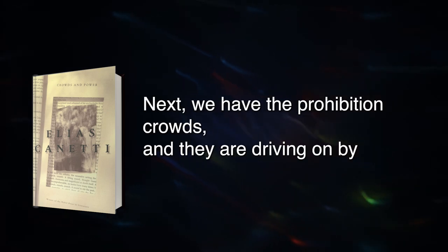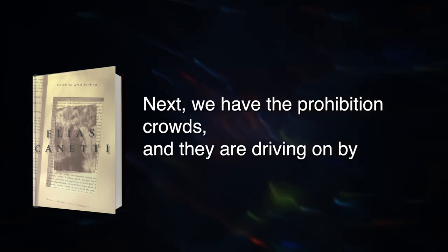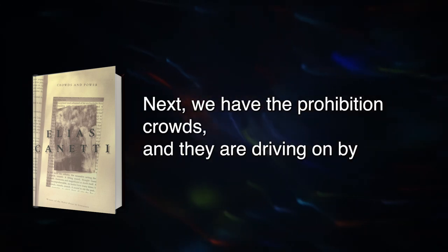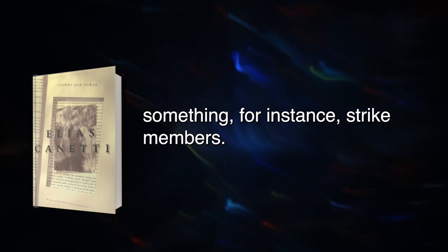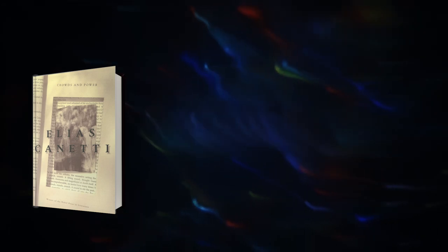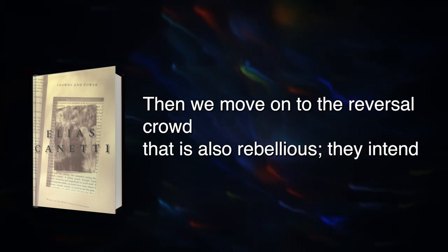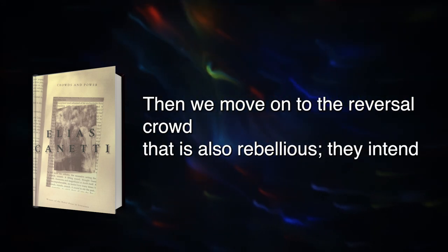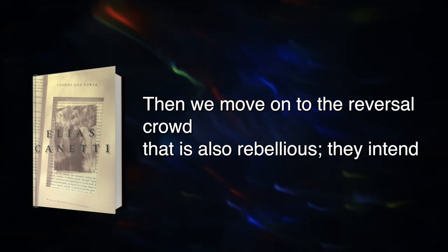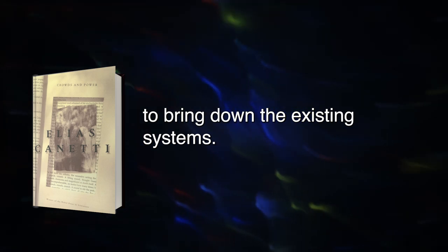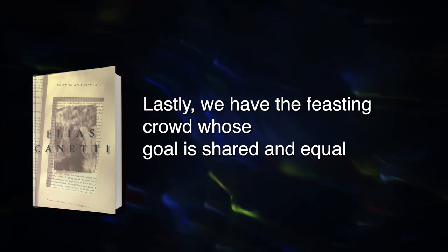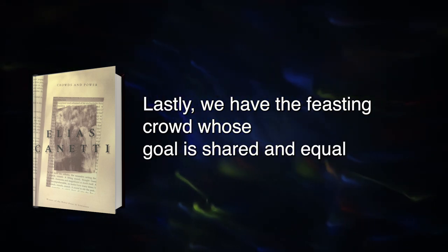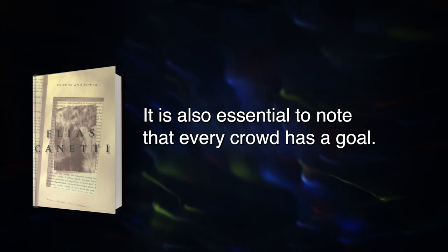Next, we have the prohibition crowds, and they are driven on by refusing to do something — for instance, strike members. Then we move on to the reversal crowd, which is also rebellious — they intend to bring down the existing systems. Lastly, we have the feasting crowd, whose goal is shared and equal indulgence.